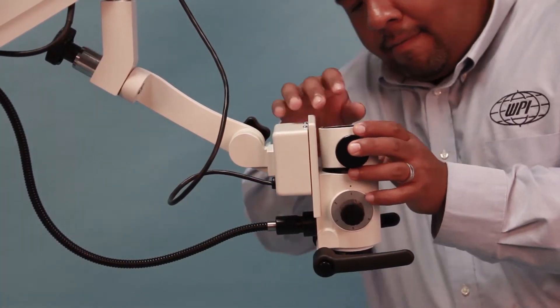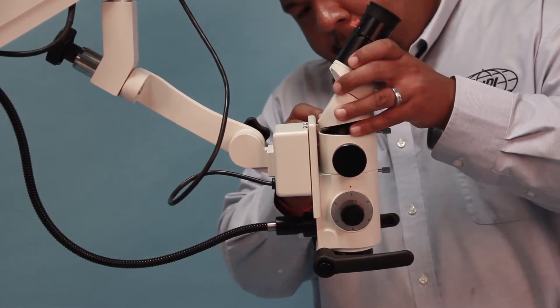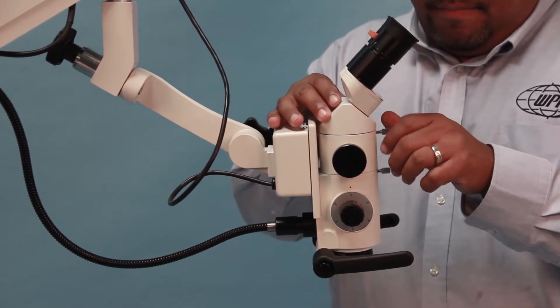Place the beam splitter in the aperture and tighten the set screw. Place the binocular headpiece into the beam splitter and tighten the set screw on the beam splitter.